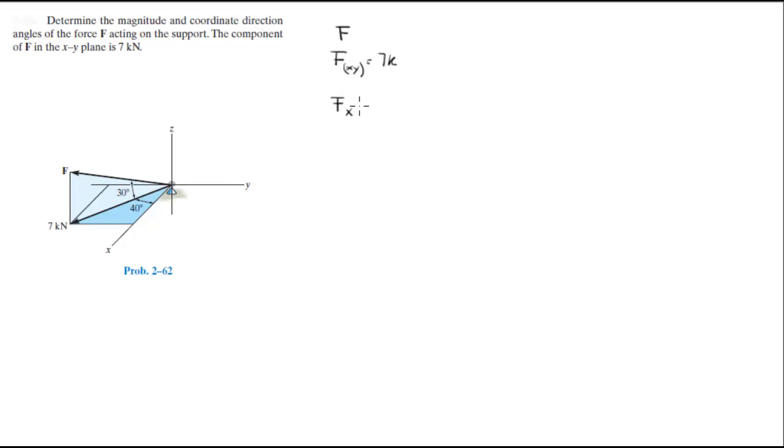So Fx, you can tell that it would be this force right here, which would be 7kN cosine 40 degrees, which equals 5.36 kN.